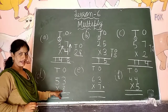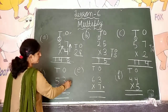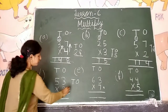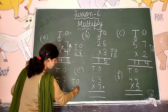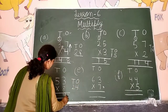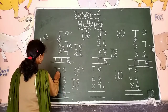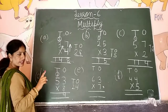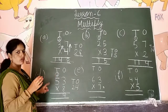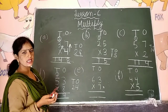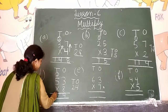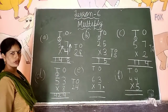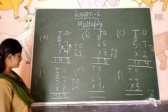Next is 53 multiplied by 8. Eight threes are twenty-four. The ones digit of 24 is four, so we write four below the ones place, and carry over two. Eight fives are forty, plus two carry over — forty-two. So the answer is four hundred twenty-four.